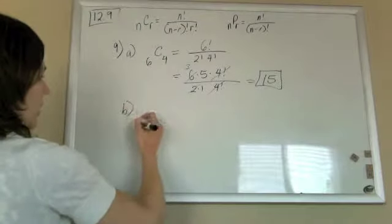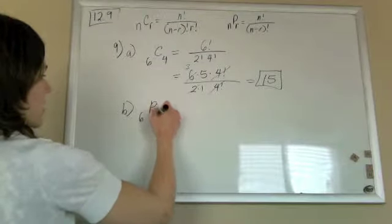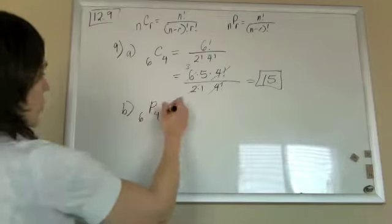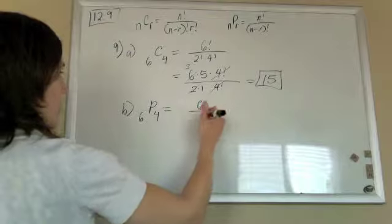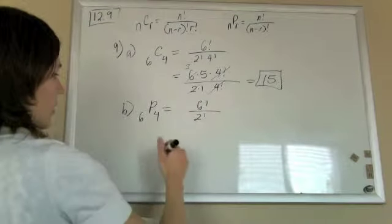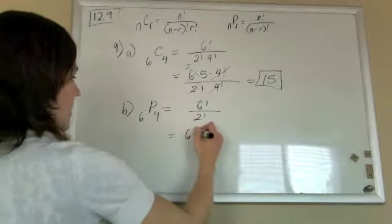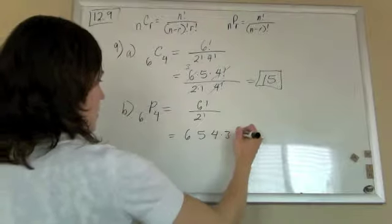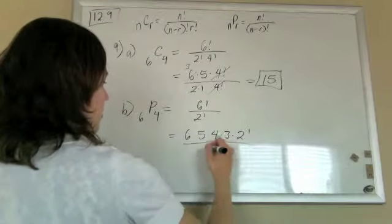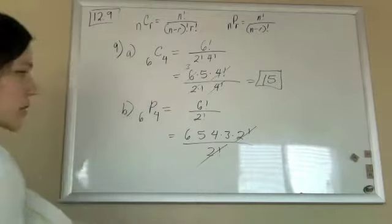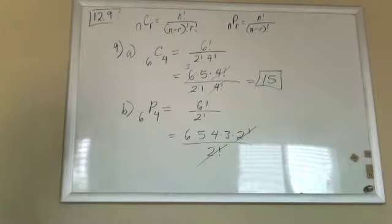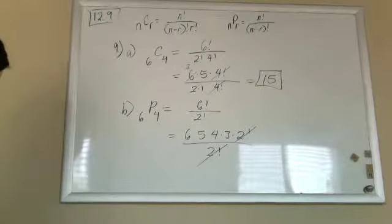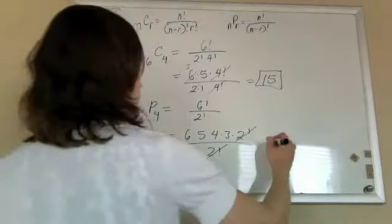Now for part b, they're taking you back to permutations where you do care about the order. And right now we're still just plugging them into formulas, so it's just 6 factorial over 2 factorial. So 6 times 5 times 4 times 3, and I'm going to stop it at the 2 factorial to let it cancel out with the 2 factorial on the bottom. And when we multiply it out, 6 times 5 times 4 times 3 is 360.